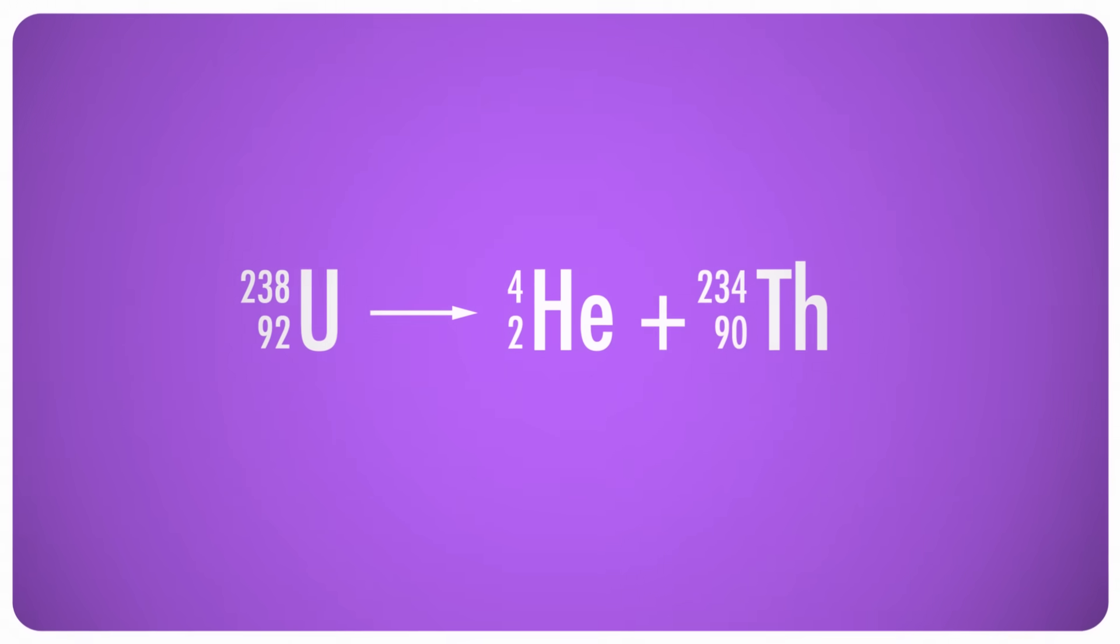So right away, you can see that the math checks out when it comes to the protons and neutrons. 92 minus 2 is 90, and 238 minus 4 leaves you with 234. But you'll note that we don't write the charges.